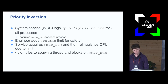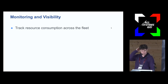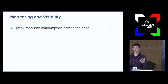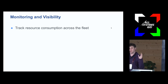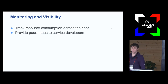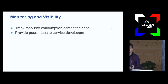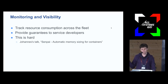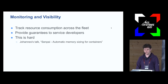Monitoring and visibility is a tricky topic. We use cgroups to classify what tax we take away from all resources by running the Facebook OS — that collection of widely deployed binaries. How do we track that and drive it down so workloads can use as much as they want? How do we provide guarantees to service owners? Johannes is giving a talk tomorrow about memory sizing in particular, where this has been a challenge — I encourage you to look at that talk.